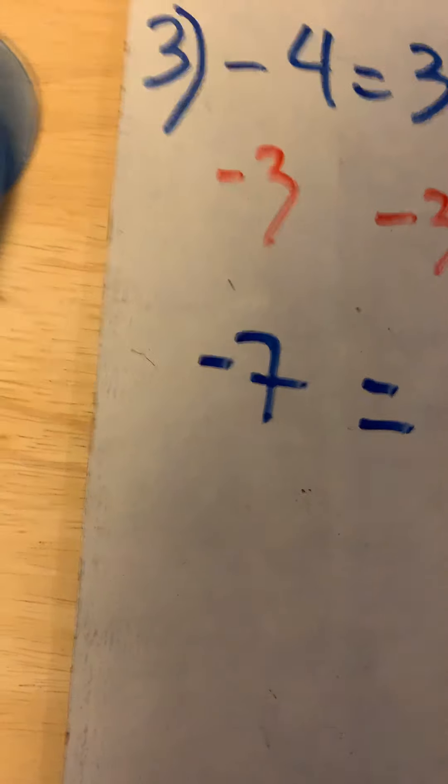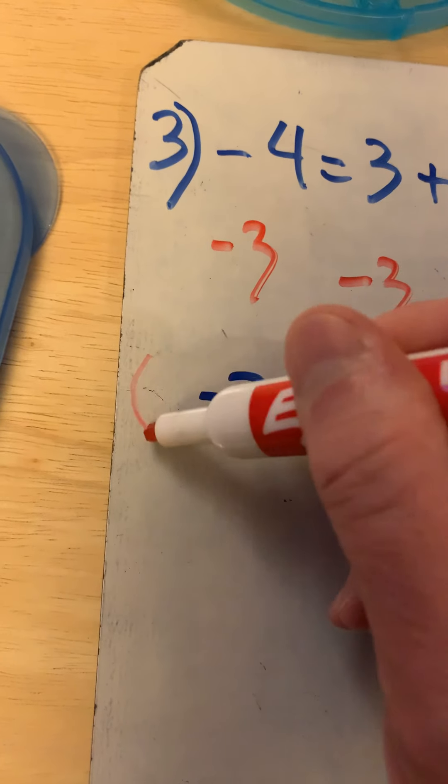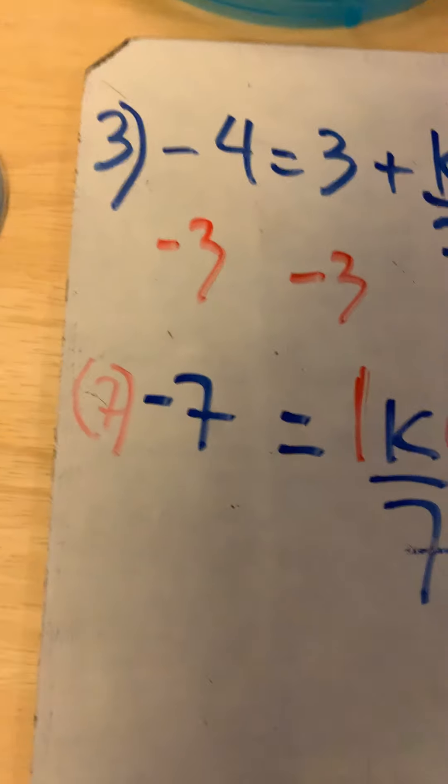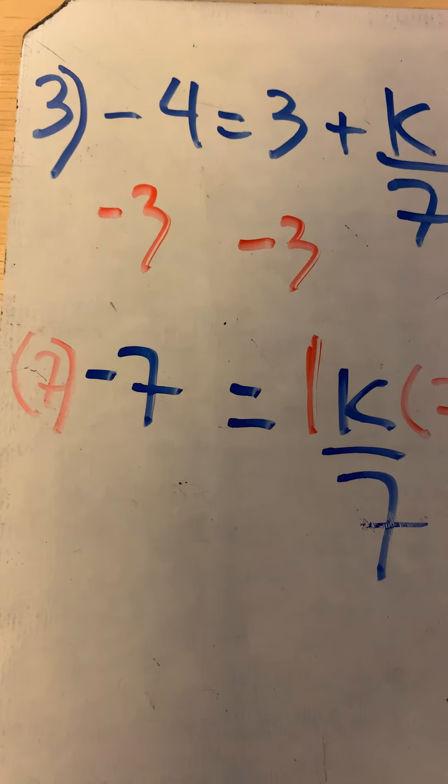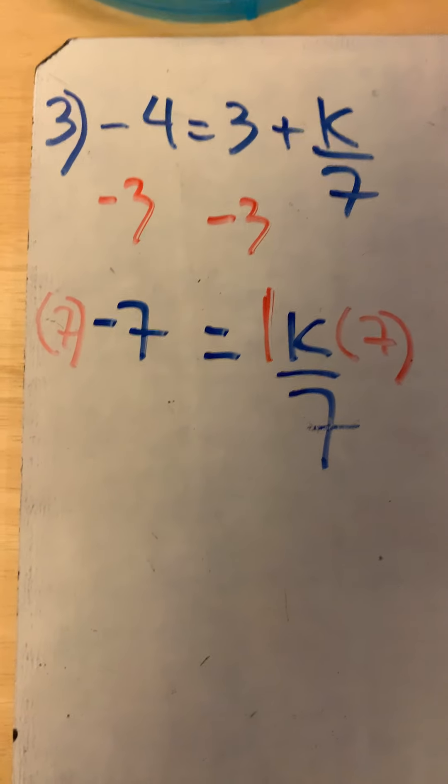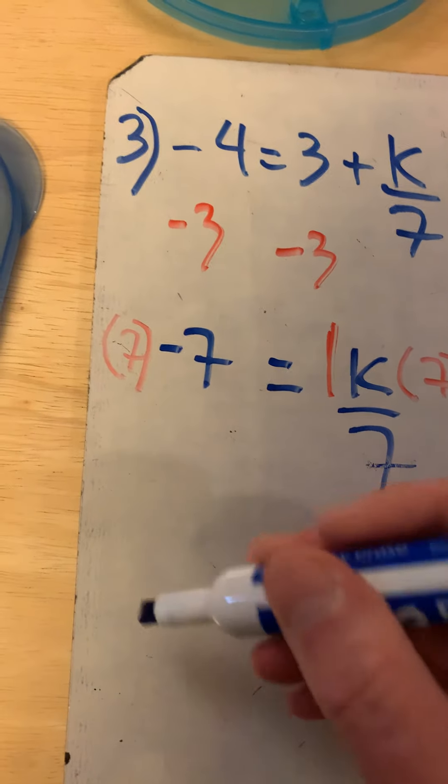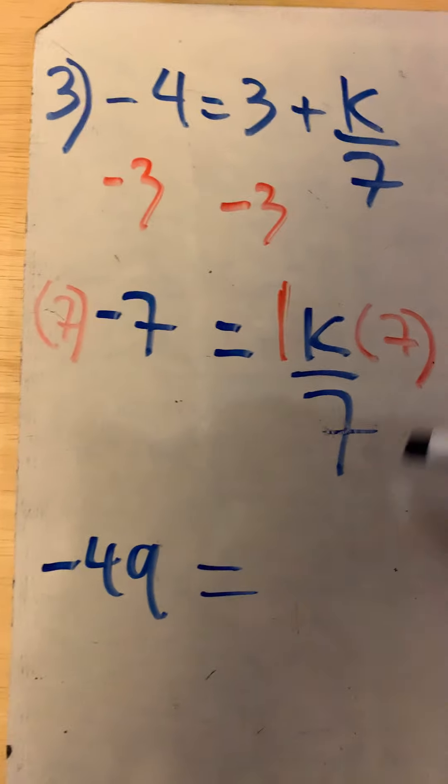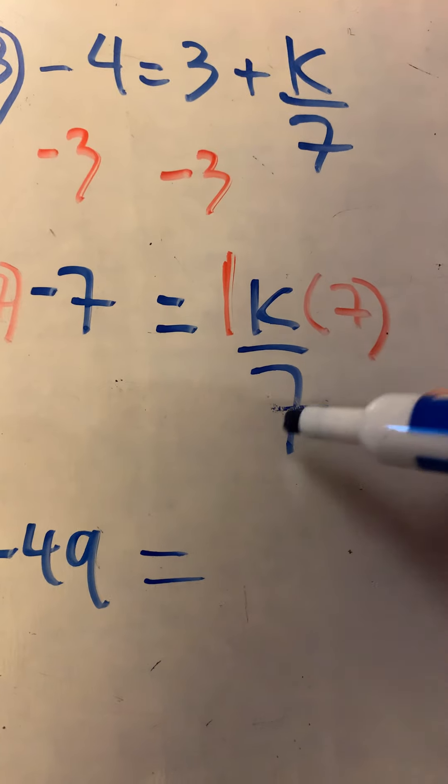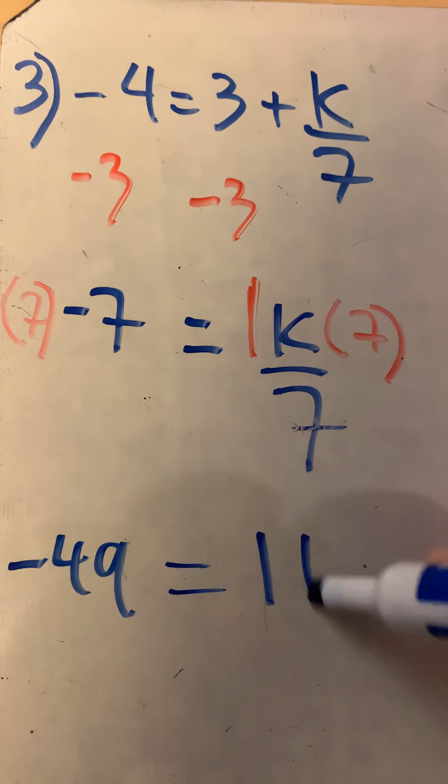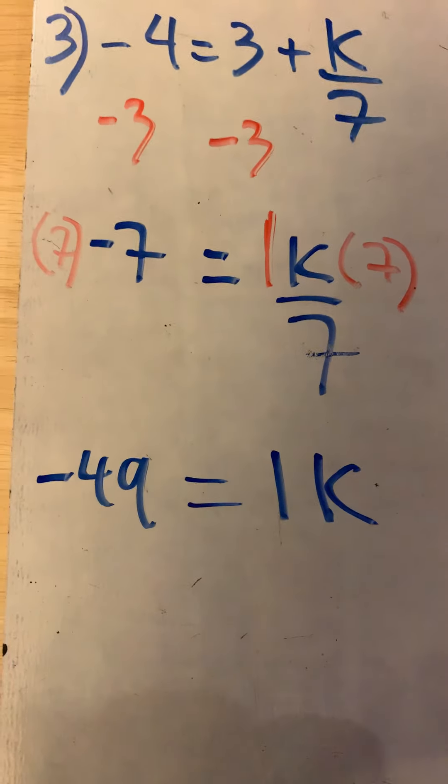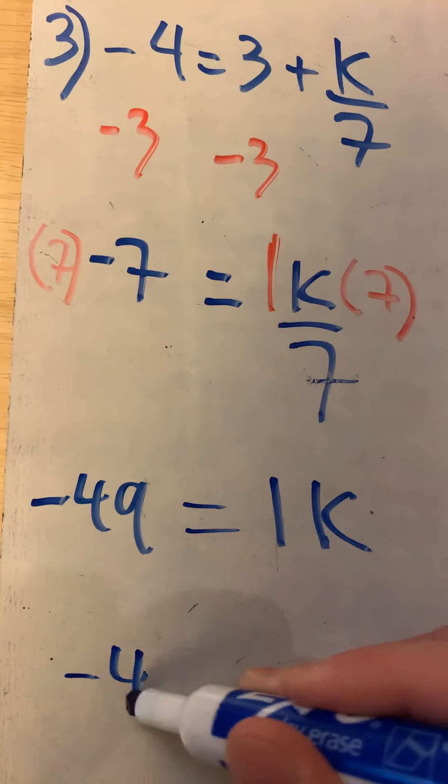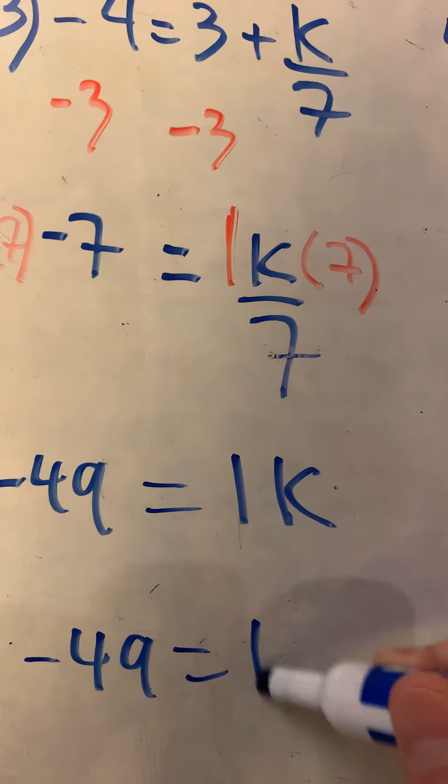We do that beside the variable and use parentheses to show that multiplication. If I do it on that side, I have to do it to the other side. The parentheses are really important here. It's -7 multiplied by 7. Keep working down the page. This is -49 equals—the seven divide by seven cancels off and I'm left with one k. Or I can just write that as -49 = k.